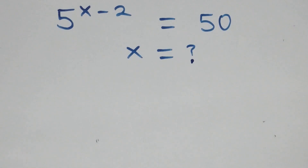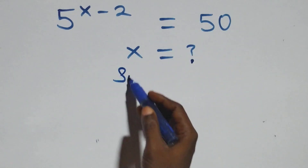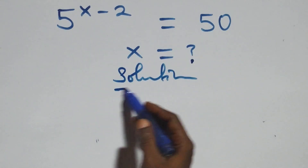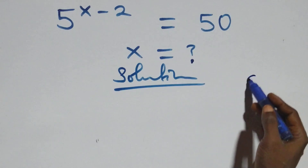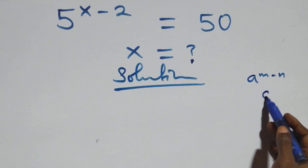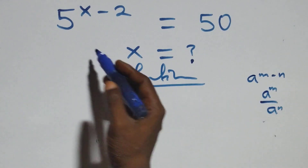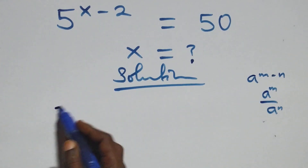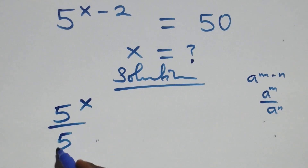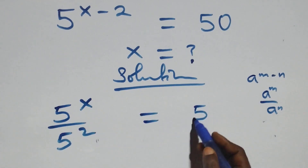Hello, you are welcome. How to solve this nice exponential equation. This follows when we have a raised to power n minus n, which is the same as a raised to power n over a raised to power n. Here we have 5 raised to power x over 5 squared equal to 50.